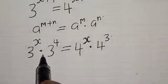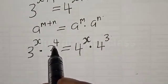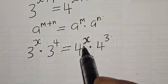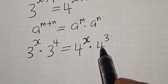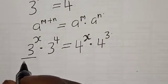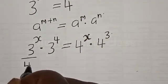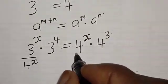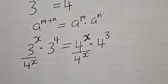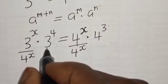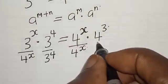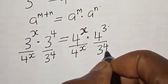We have 3 raised to power x multiplied by 3 raised to power 4 on the left hand side, and on the right hand side, 4 raised to power x multiplied by 4 raised to power 3. Then let's divide both sides by 4 raised to power x, and also by 3 raised to power 4.